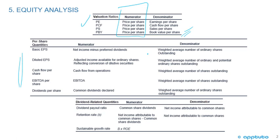Basic earnings per share is net income minus preferred dividends divided by the weighted average number of ordinary shares outstanding. Diluted earnings per share adjusts net income available for ordinary shares, reflecting conversion of diluted securities. If there are convertible preferreds, we no longer deduct the dividend. If it's convertible debt, we add back the debt times one minus the tax rate.